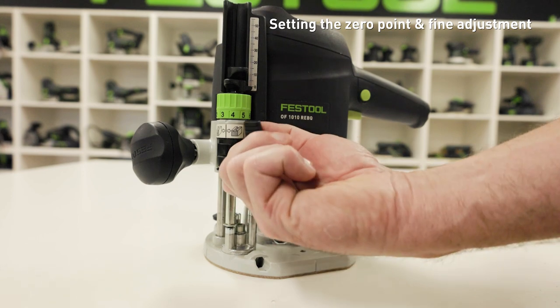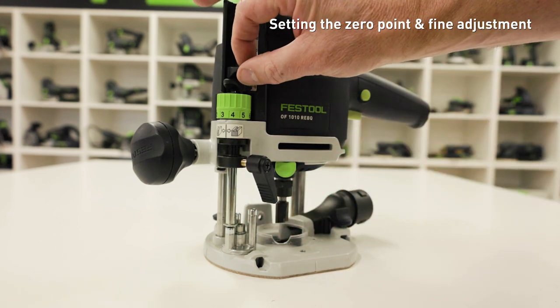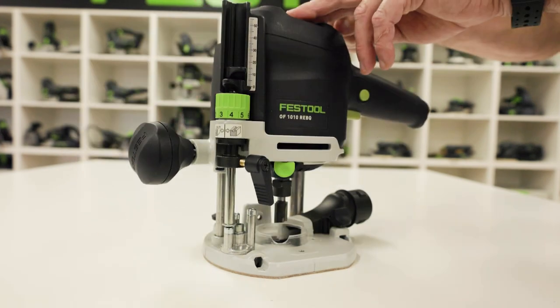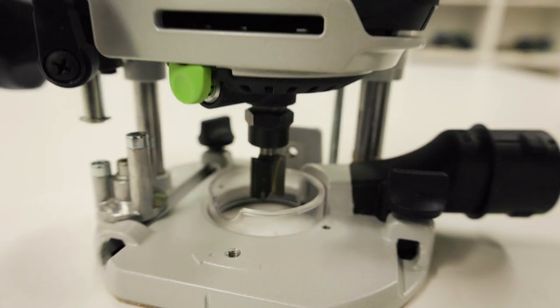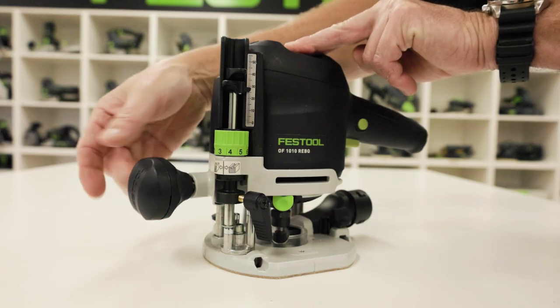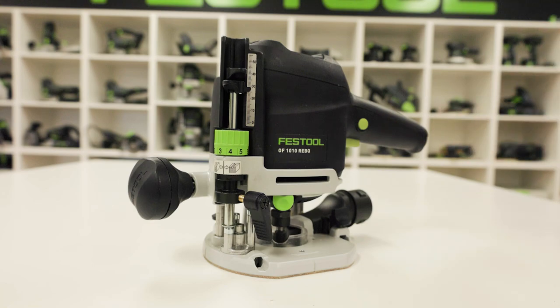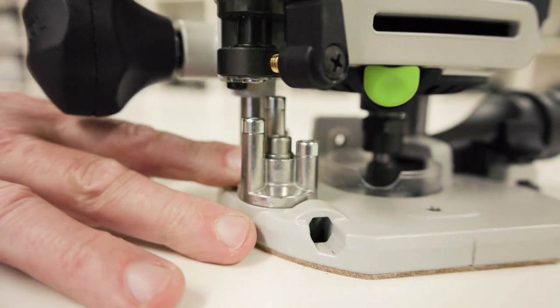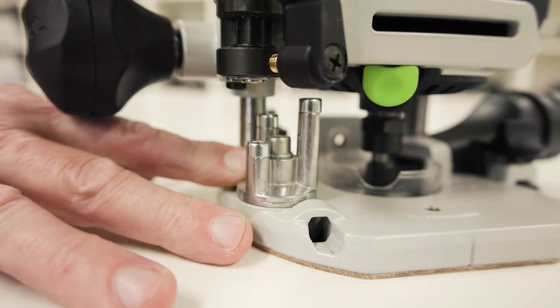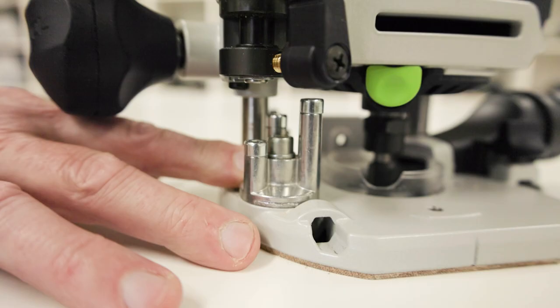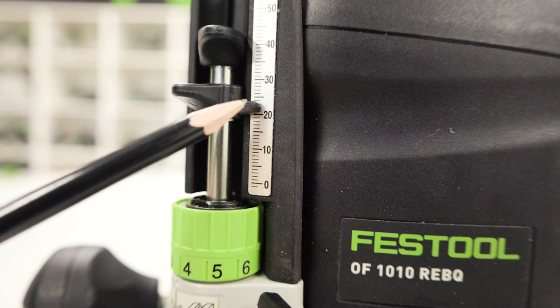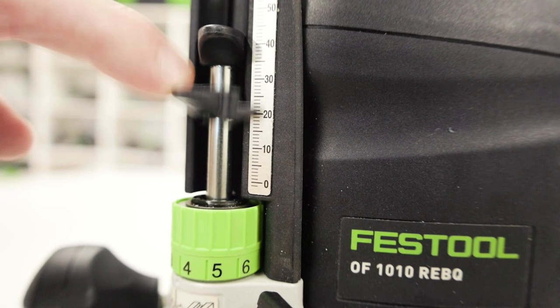To zero the router cutter, open the clamping lever so that the stop cylinder can be moved freely. Open the rotary knob and press the machine down until the milling cutter rests on the base. Clamp the machine in this position. Turn the sensing stop so that the lowest level stop is in line with the clamping lever. Push the stop cylinder down against the sensing stop. Push the pointer down so that it shows zero on the scale.